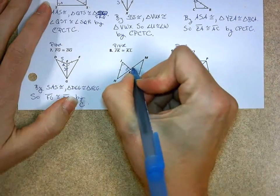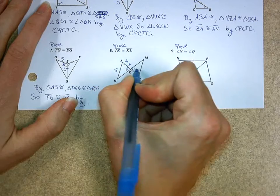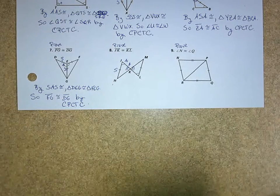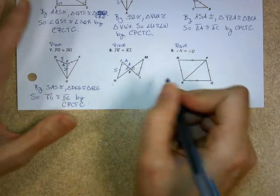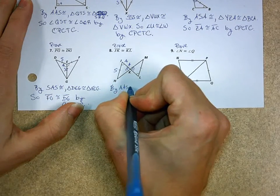So here I have vertical angles, and I always double check, because this is angle, angle, side, that my angles are opposite the side, so everything corresponds, everything matchy-matchy as well. So I'm going to go with this one. I got by angle, angle, side congruence.